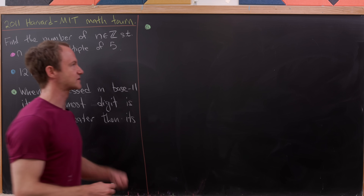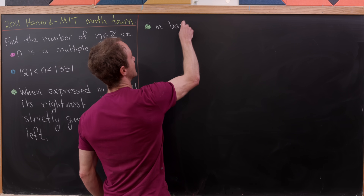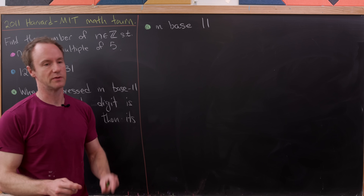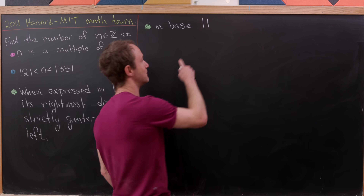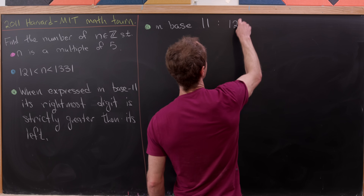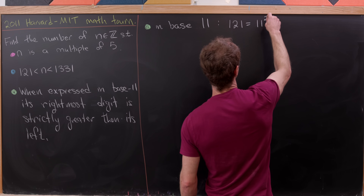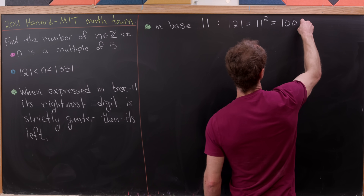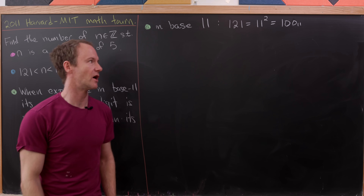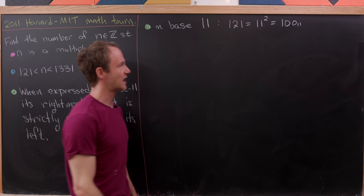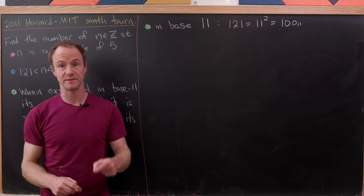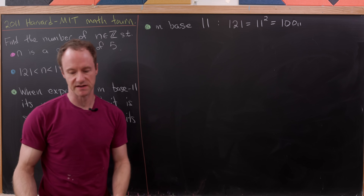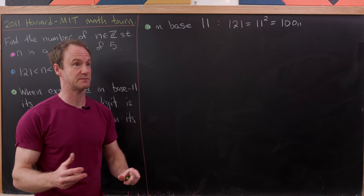In base eleven, 121 is equal to eleven squared, which is 100 in base eleven — written as one-zero-zero base eleven. That's because eleven squared equals one times eleven squared plus zero times eleven to the first power plus zero times eleven to the zeroth power. That's a standard base expansion.